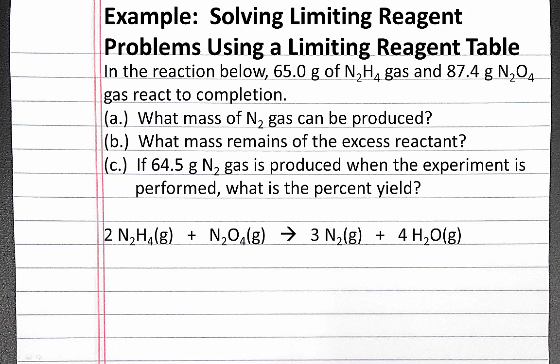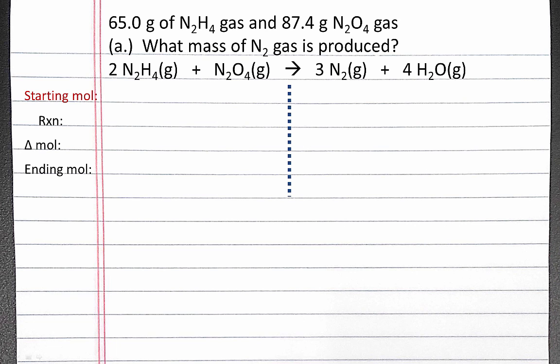We know this is a limiting reagent problem because we're given amounts of two different reactants in our reaction. For a limiting reagent problem, we're going to calculate starting moles, the number of reactions that can be performed with each of our reactants, our change in moles, and the moles of each at the end.